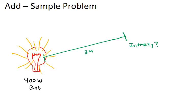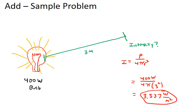So let's practice this one here. Go ahead and pause the clip and give this one a try. And then when you're ready to check, you can hit play to continue. All right, so intensity is power divided by 4 pi r squared. We should get 3.537 watts per meter squared or lux for the intensity of light three meters out.